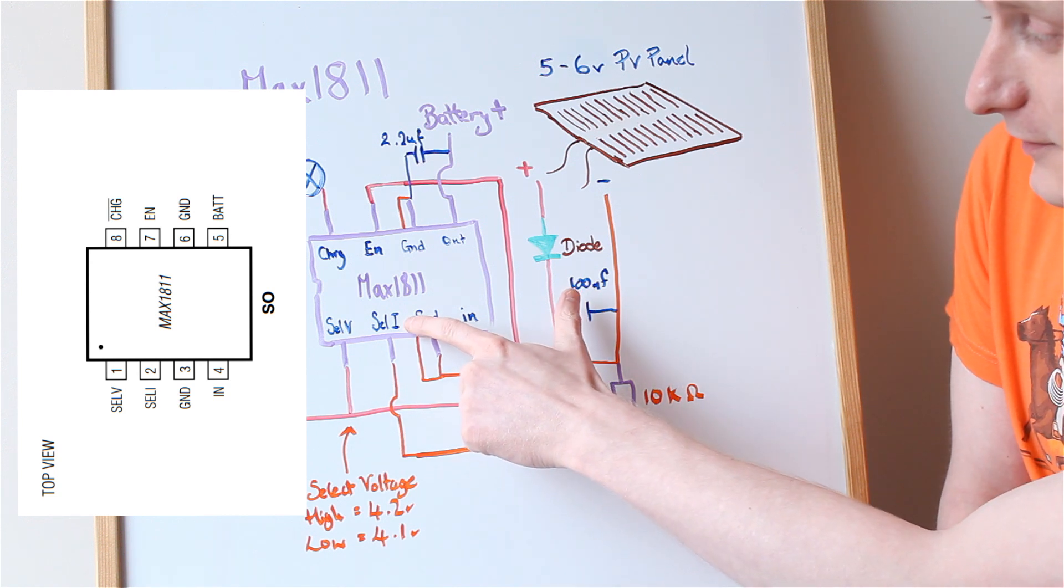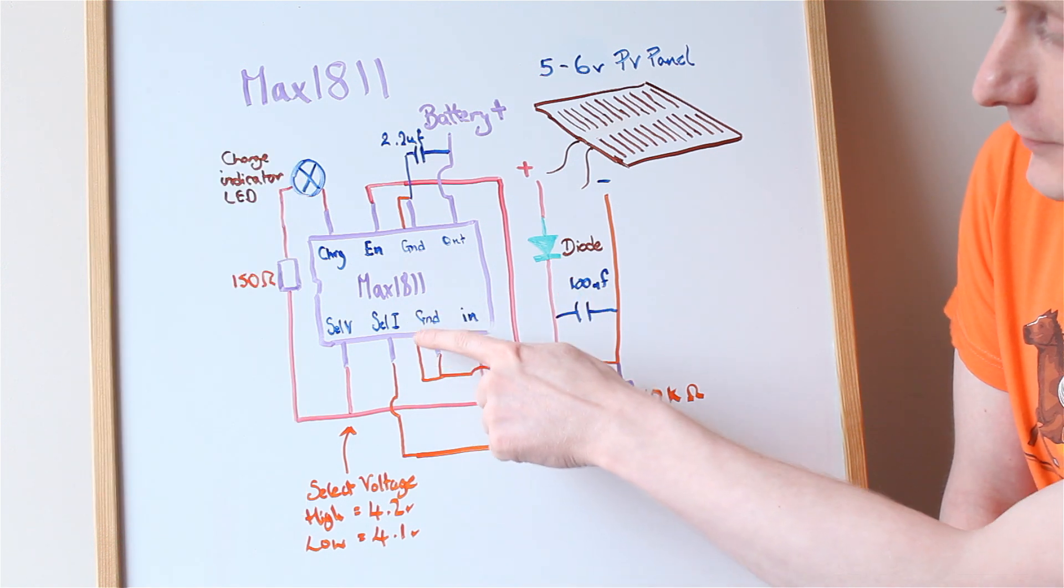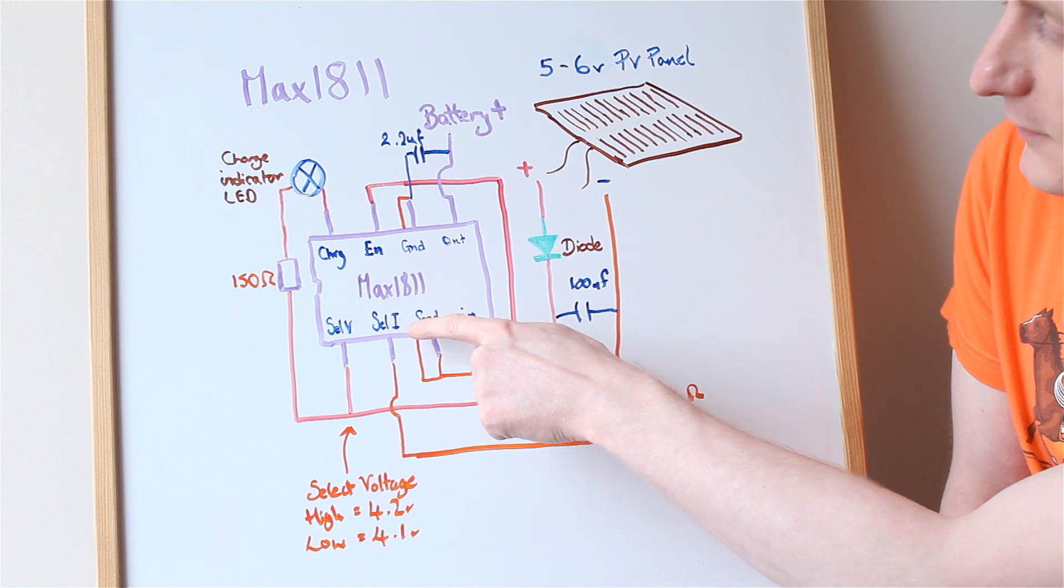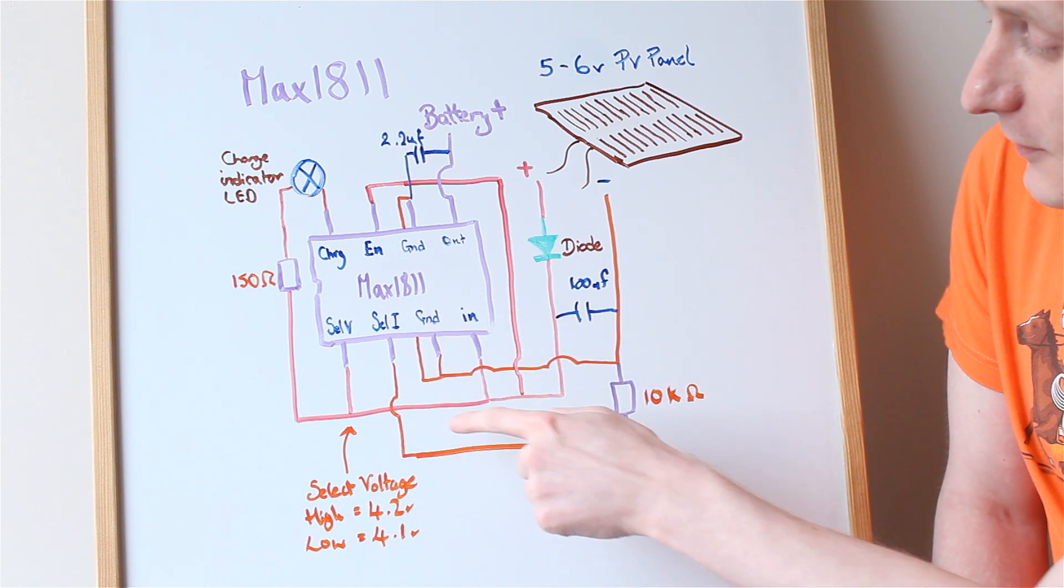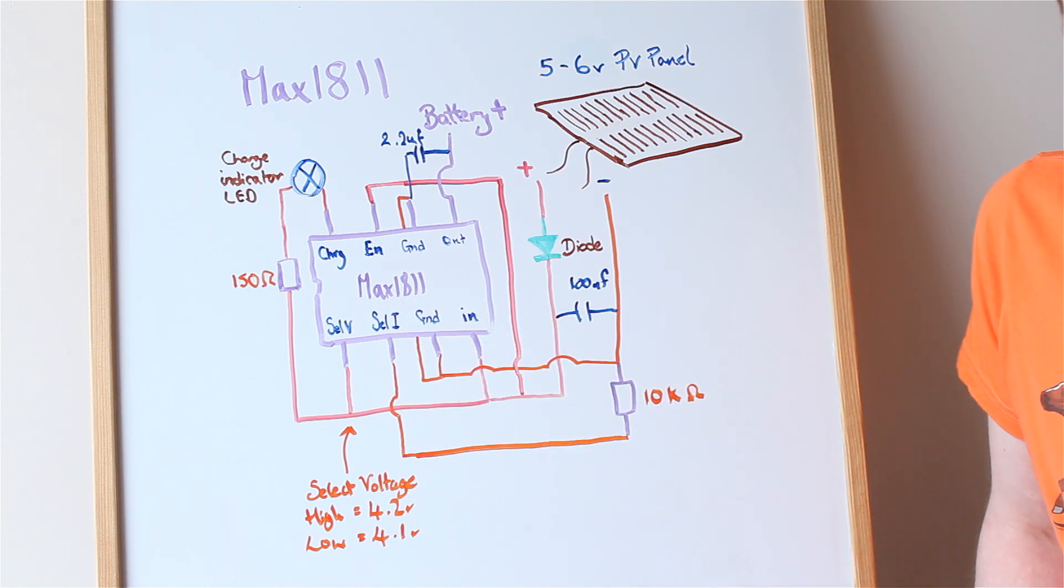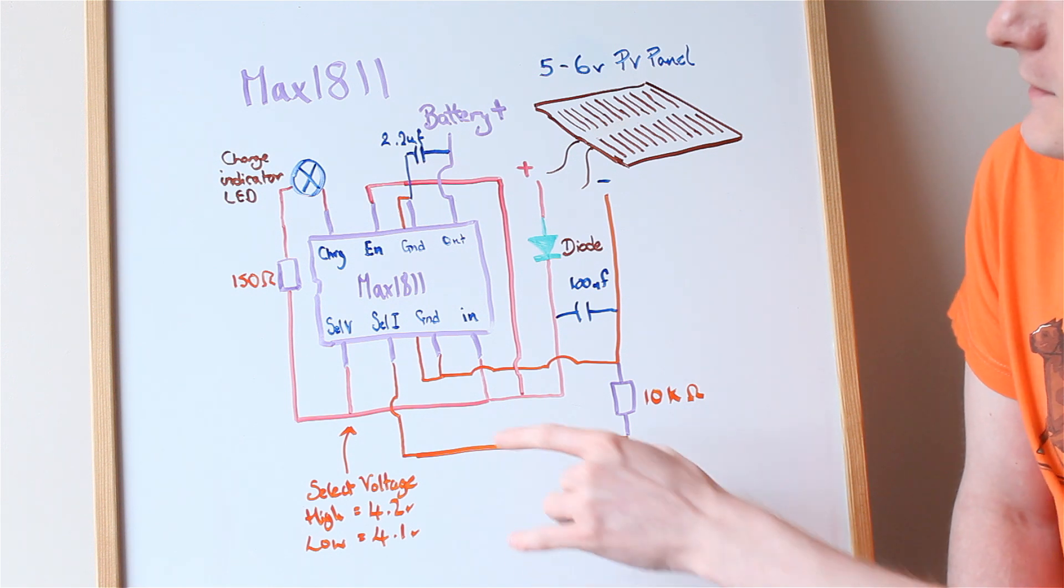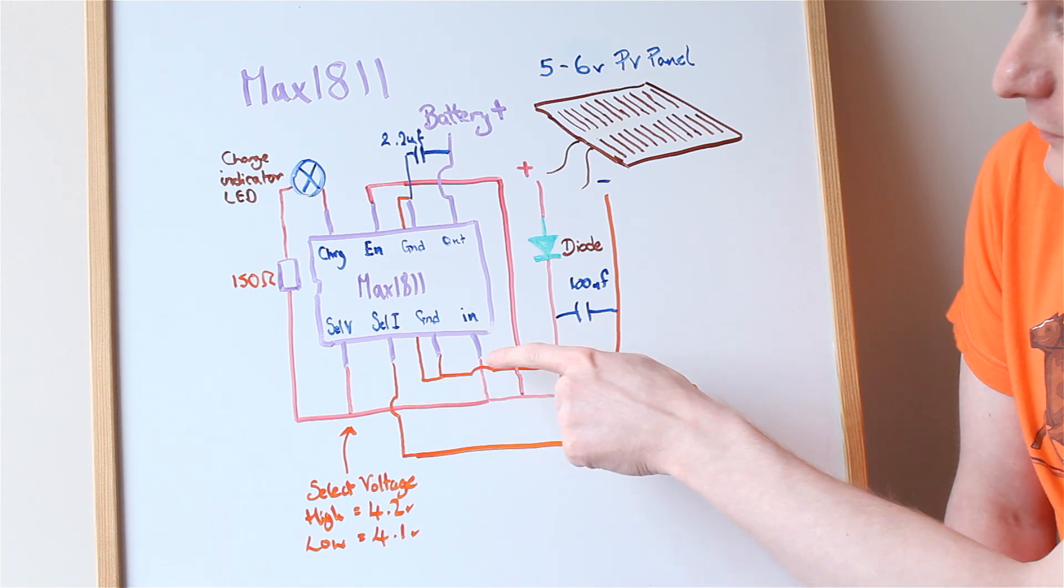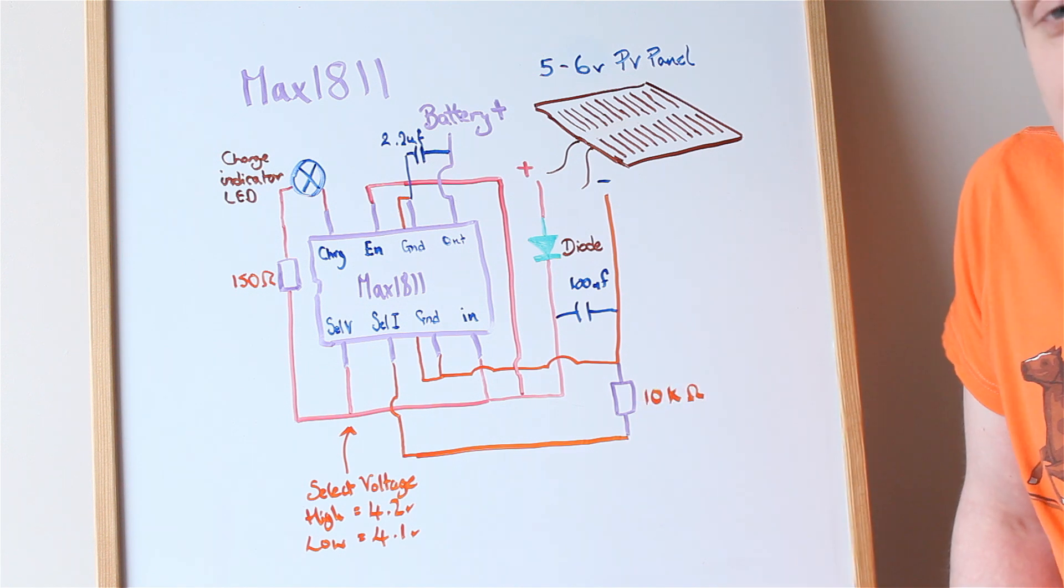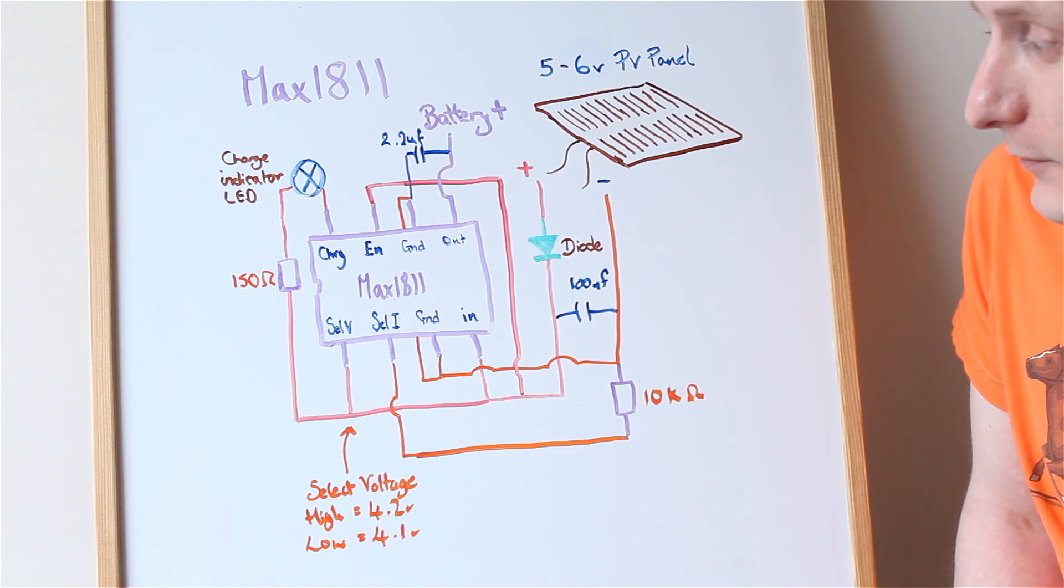That's the SELECT I, so that's SELECT CURRENT, so it's like the VIR symbol things, so SELECT CURRENT, that's going to GROUND and that's selecting 100mA, but if you were to put it to IN here, voltage coming in, then it would select it at 500mA.